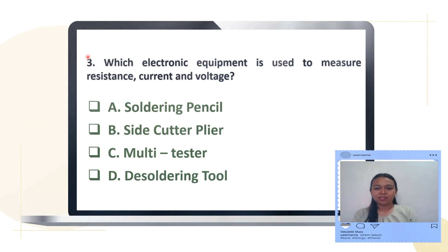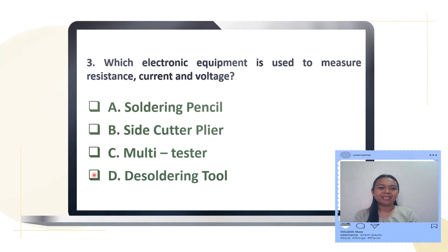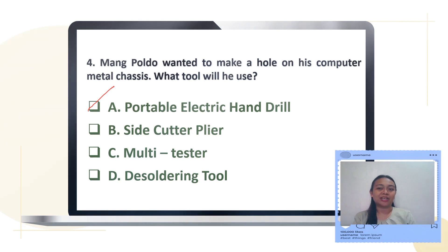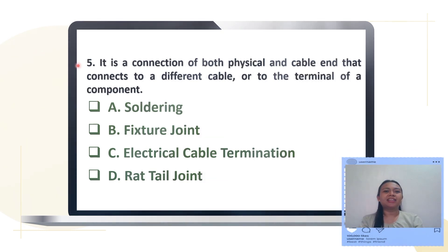Number three: which electronic equipment is used to measure resistance, current, and voltage? Is it A. soldering pencil, B. side cutter plier, C. multi-tester, or D. desoldering tool? The correct answer is Letter C, multi-tester.